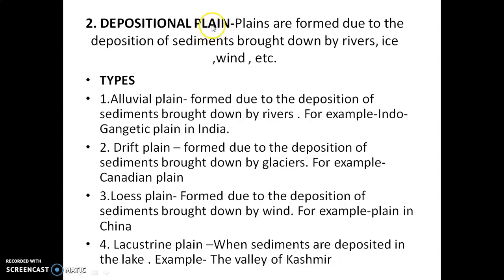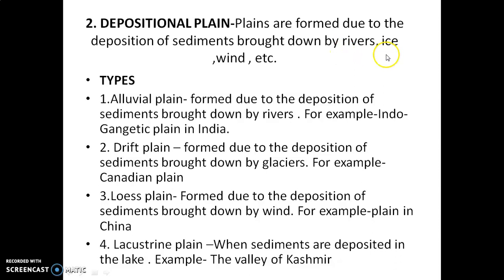Next, depositional plains. When rivers come down from mountains they bring lots of sediments — sediments means sand, silt, and clay. When wind, rivers, or ice bring lots of sediment from one place and deposit it in another place, deposition takes place and in this way depositional plains are formed.